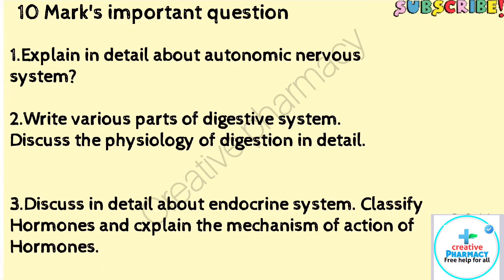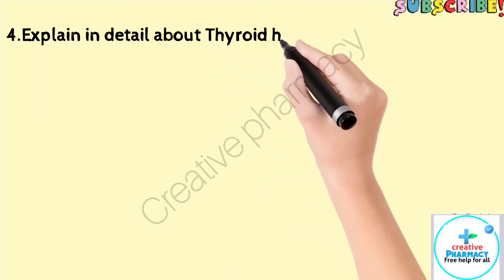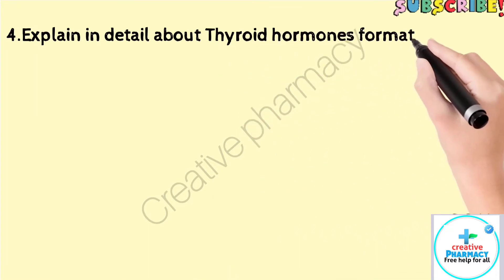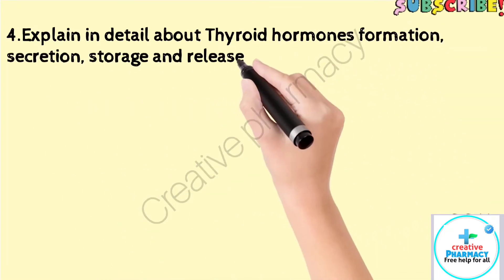Question 4: Explain in detail about thyroid hormones — their formation, secretion, storage, and release — with a proper diagram.